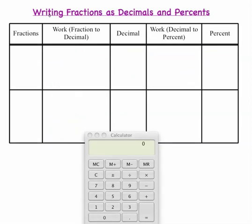The numerator of 6 divided by the denominator of 8, converts the fraction of 6 eighths into the decimal 75 hundredths, or 0.75.